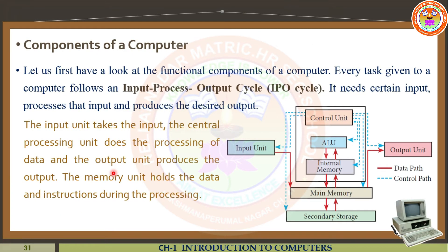In the components of computer, we follow the IPO cycle. What is the meaning of IPO cycle? IPO cycle is nothing but input, process, output — that is the expansion of IPO. I stands for input, P stands for process, and O stands for output. So how does this cycle work? It needs certain input, processes that input, and produces the desired output. This is the exact mechanism to follow when you do a process in the computer.